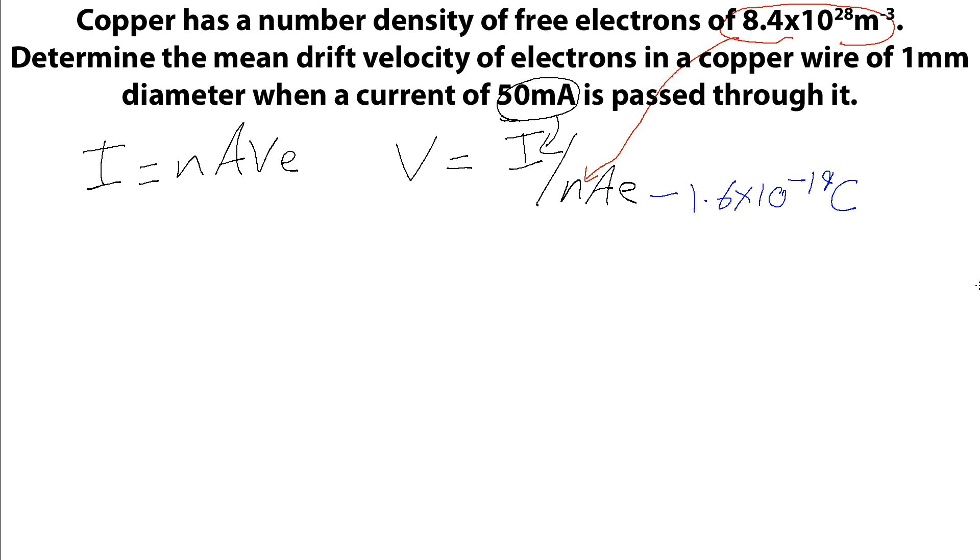So the area will be this, the circular area with one millimeter diameter. So for a circle, the area is pi R squared. The radius is going to be half the diameter. So we get pi times 5 times 10 to the minus 4. So 1 millimeter is 10 to the minus 3 meters. A half of that is 5 times 10 to the minus 4 meters. We're going to square it. That gives a value for the area of 7.854 times 10 to the minus 7 square meters.